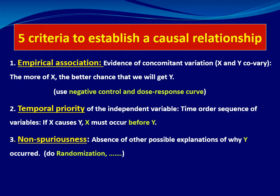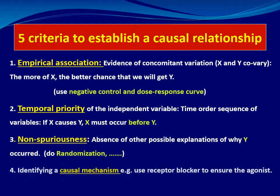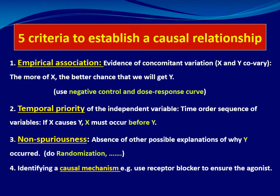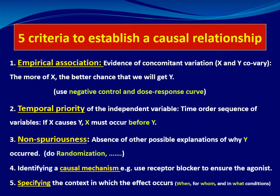Criteria one, two, and three are the essential factors to establish causality assessment. The last two criteria are considered to strengthen the causal explanation, such as identifying the causal mechanism and specifying the context in which the effect was found.